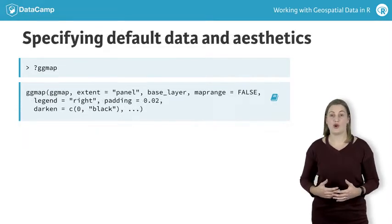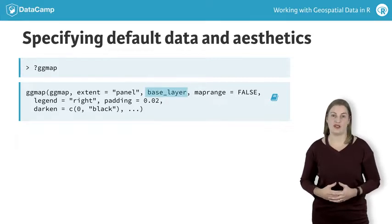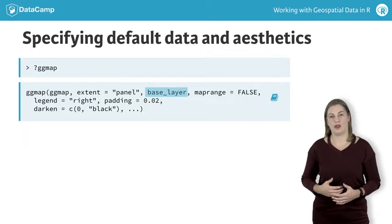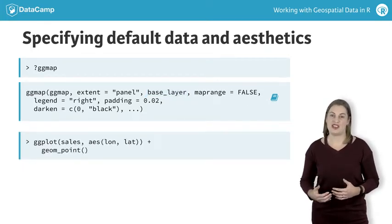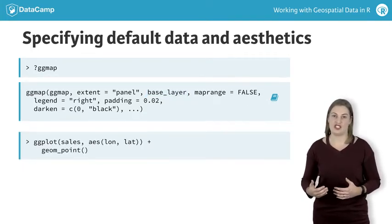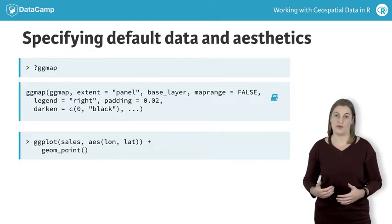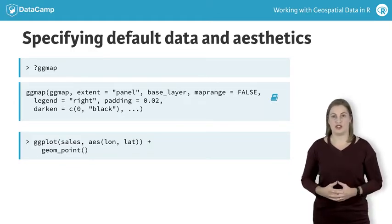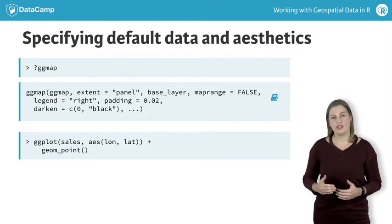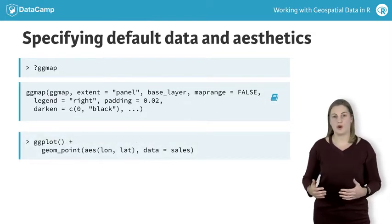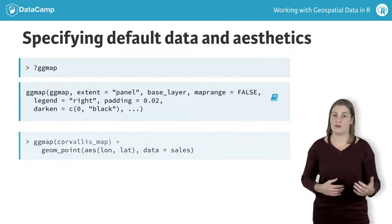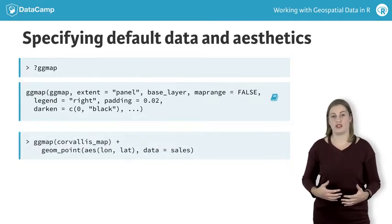The ggmap function also has some useful arguments. In particular, the base_layer argument, which is best explained by example. Recall our original plot of sales using ggplot2 — we specified the data and x and y position aesthetics in the ggplot call. To translate this plot to use ggmap, we moved the data and aesthetics to the geom_point call. This allowed us to swap out the ggplot2 call with the ggmap call and have our points sit on top of our map.